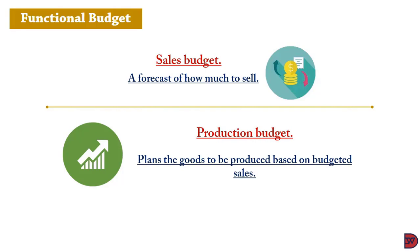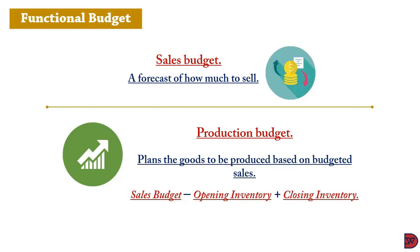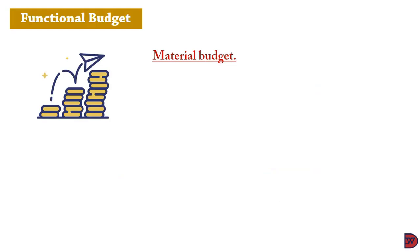The production budget is prepared after the sales budget to ensure enough products are available for the planned sales. If sales is the principal budget factor, the formula is: Production = Sales budget − Opening inventory + Closing inventory. For example, if 50,000 units need to be sold and you already have 20,000 in stock, you don't need to produce the full 50,000. Most businesses also keep a certain closing inventory to avoid running out in the coming period.